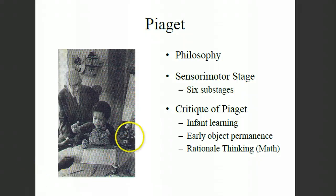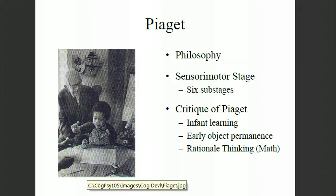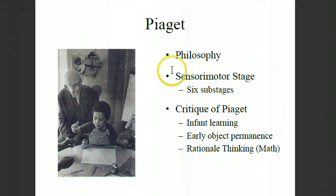Hello. I'm looking forward to introducing you to Piaget, an amazing cognitive developmental psychologist who put together a four-stage theory of cognitive development to help shape the way that developmental psychology has started. First I'll introduce you to his philosophy, then I'll introduce you to the first of his four stages, the sensorimotor stage, which itself is comprised of six sub-stages, and then I'll share with you some of the critiques of Piaget, because while he introduced an incredible theory, in several ways we've gone beyond it at this point.